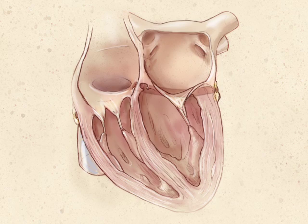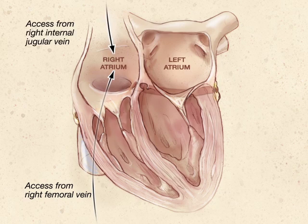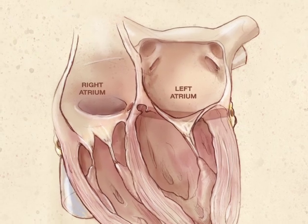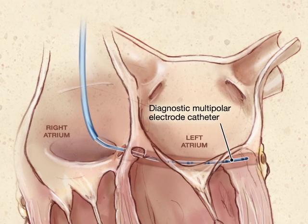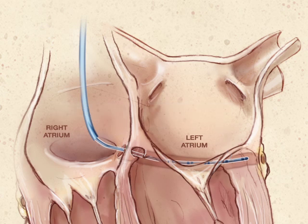Once in the electrophysiology laboratory, vascular access is typically obtained through the femoral vein; the right internal jugular vein is sometimes used as an alternative. A diagnostic multipolar electrode catheter is placed into the patient's coronary sinus to permit pacing and recording of electrical activity in the left atrium. Two transseptal punctures are performed and sheaths are advanced into the left atrium.